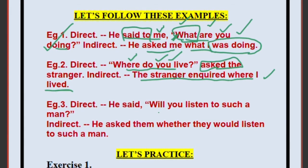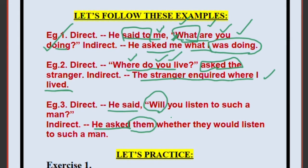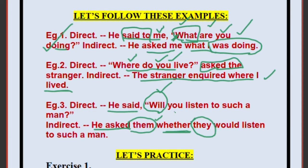Example 3: He said, 'Will you listen to me?' The word 'will' is not a WH question. So: He asked — then use 'whether' or 'if' (since it's not a WH question). He asked them whether — 'you' changes to 'they' (if you wrote 'them' earlier). 'Will listen' changes to 'would listen' (past tense). So: He asked them whether they would listen to such a man.